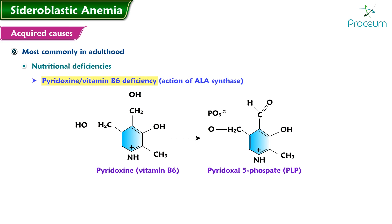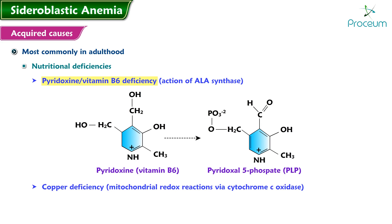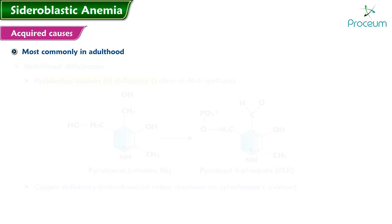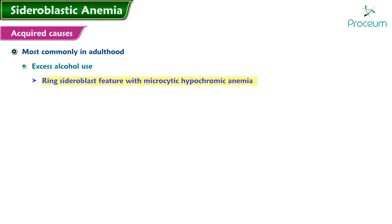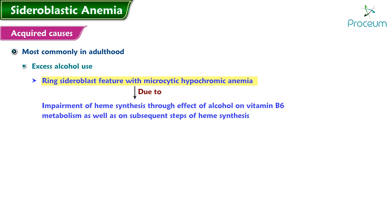Additional acquired causes include nutritional deficiencies: pyridoxine (vitamin B6) deficiency — B6 is needed for the action of ALA synthase — and copper deficiency, as copper plays a role in mitochondrial redox reactions via cytochrome c oxidase. Regarding excess alcohol use, the ring sideroblast feature and microcytic hypochromic anemia observed with chronic alcohol use has been attributed to impairment of heme synthesis through the effect of alcohol on vitamin B6 metabolism as well as on subsequent steps of heme synthesis.